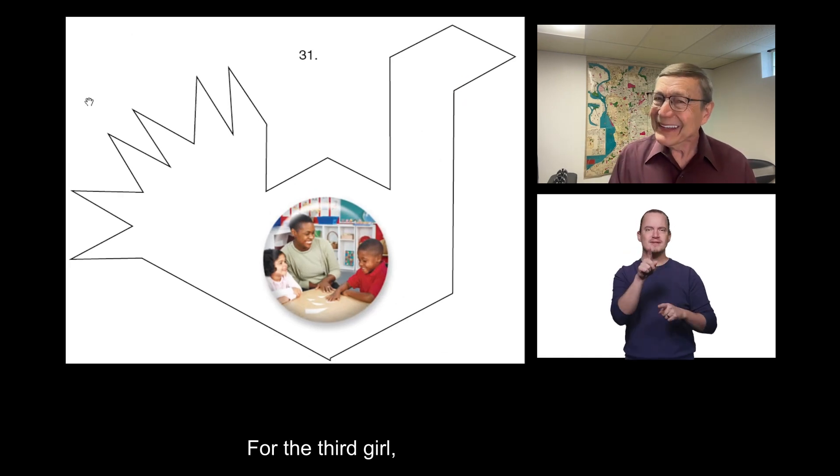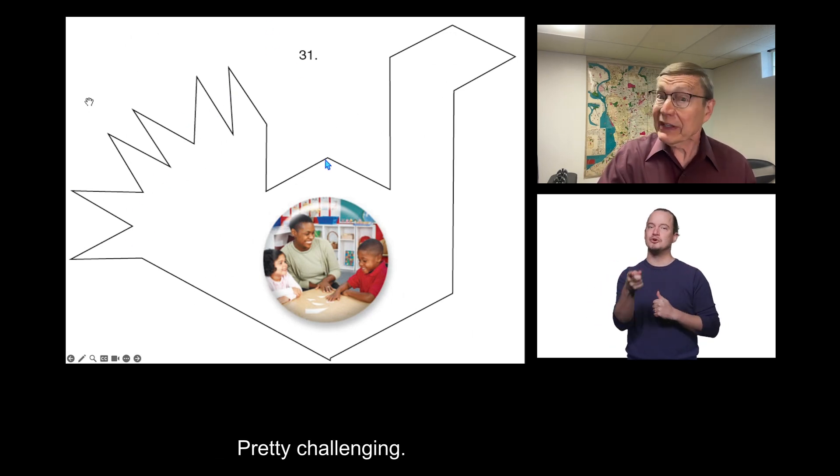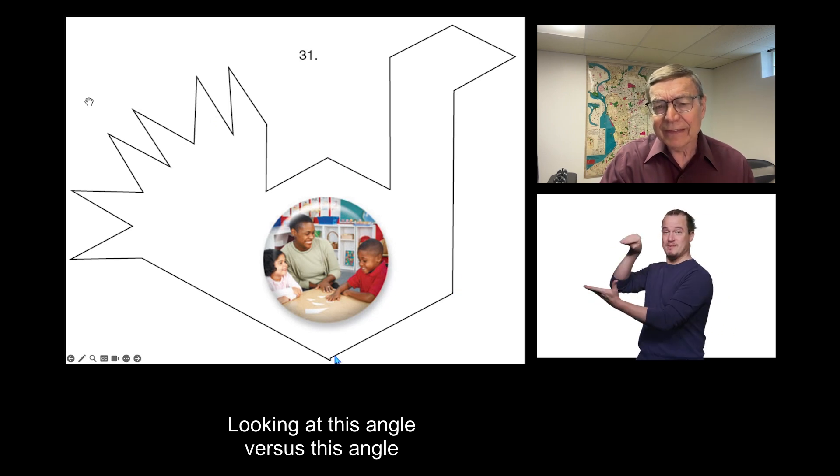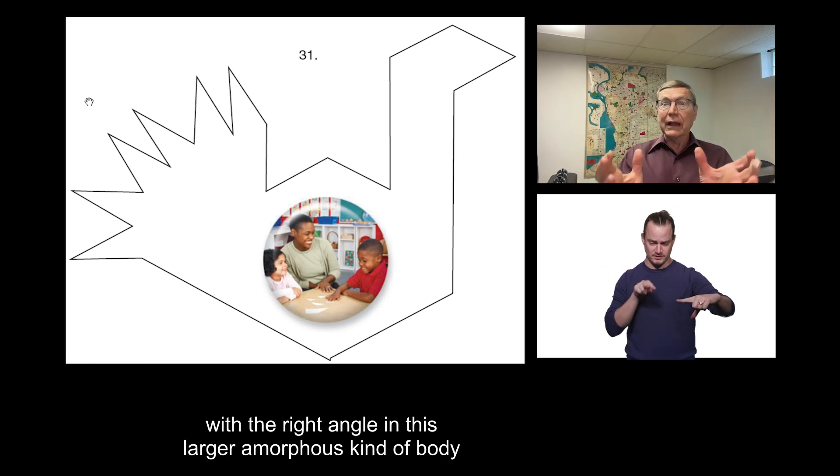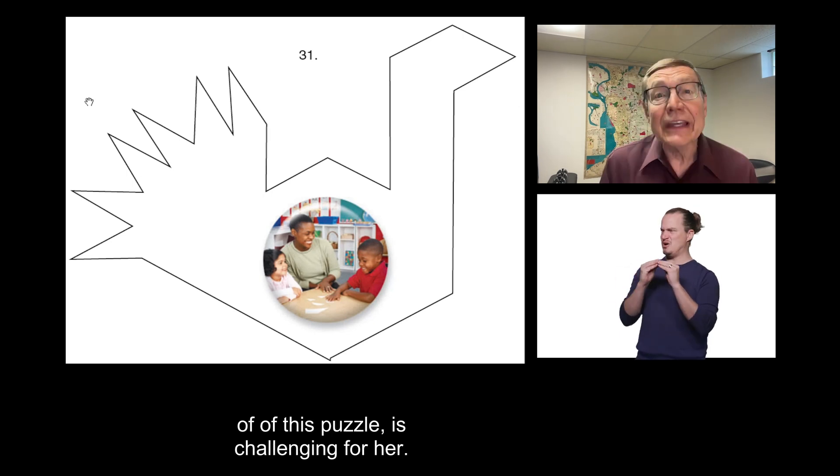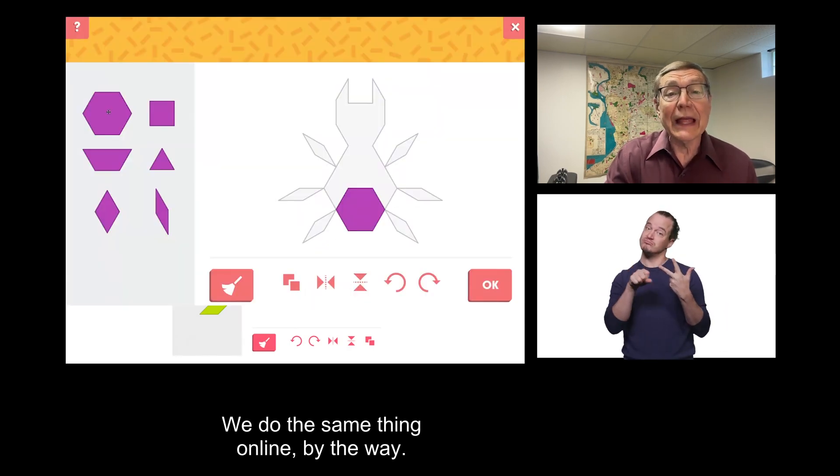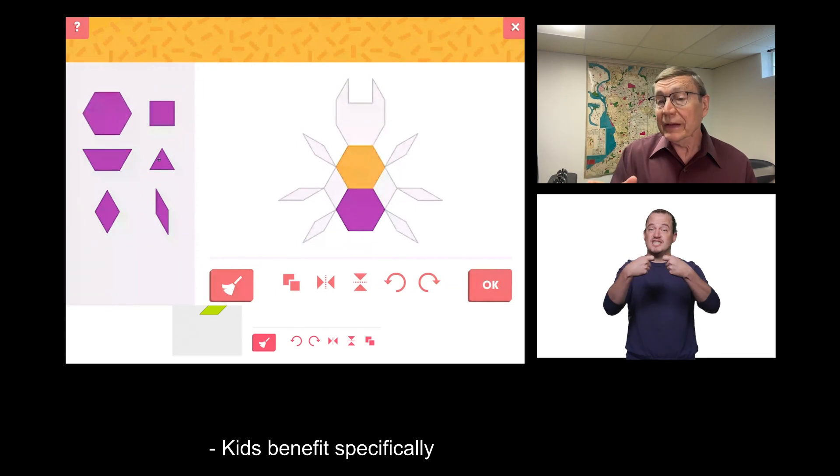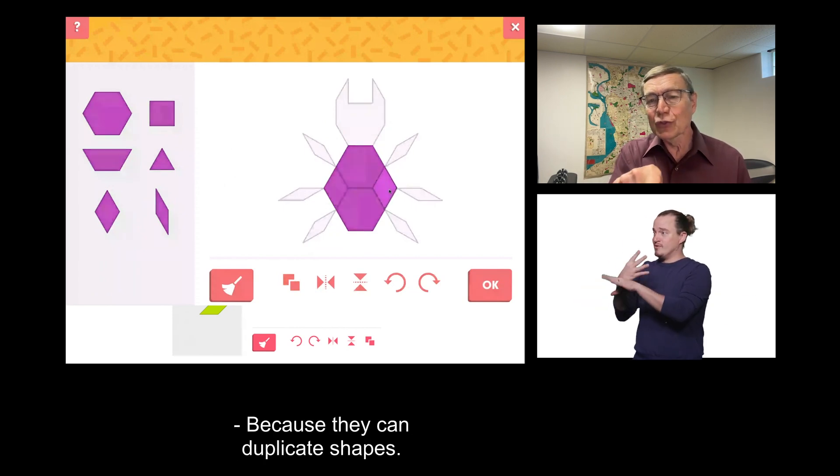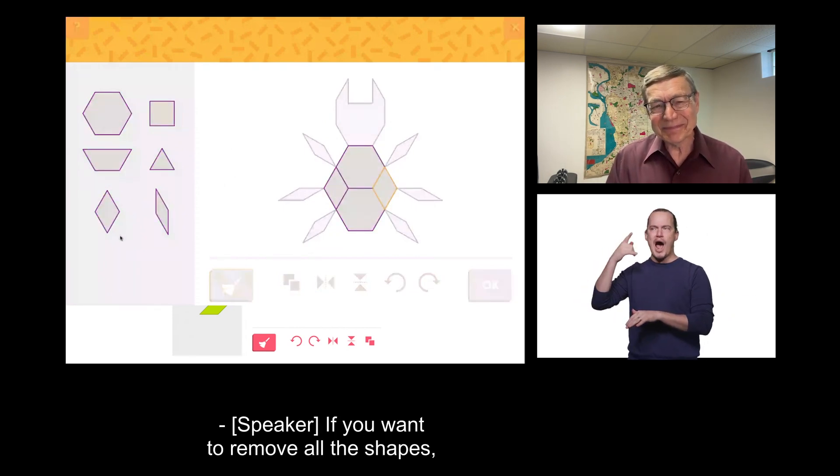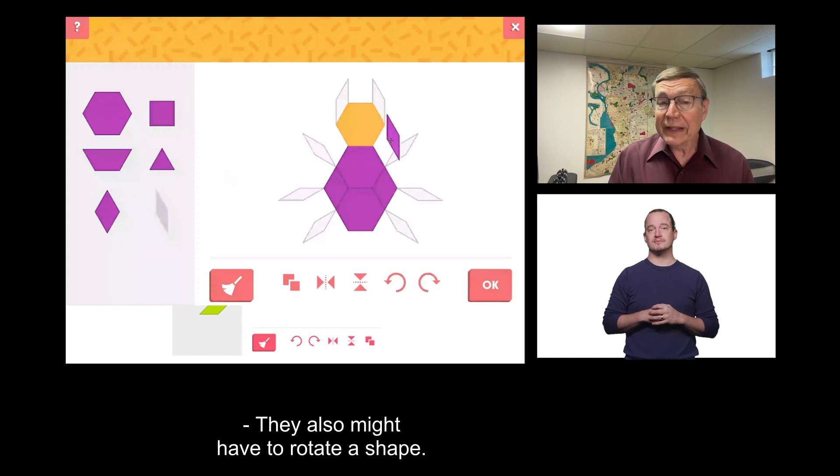For the third girl, we want to give her some challenges. Putting those tan rhombi here, pretty challenging. Looking at this angle versus this angle versus this angle and making sure you've got a shape with the right angle in this larger amorphous kind of body of this puzzle is challenging for her, the third girl there. We do the same thing online, by the way. Kids benefit specifically from working online because they can duplicate shapes. If you want to remove all the shapes, click this button to clean them away. They also might have to rotate a shape.